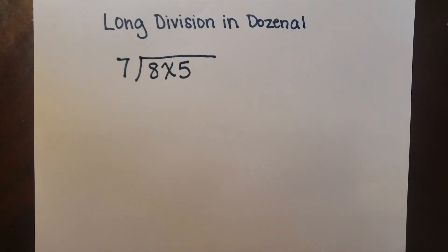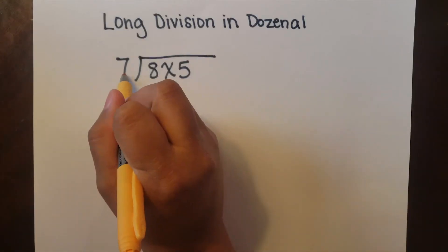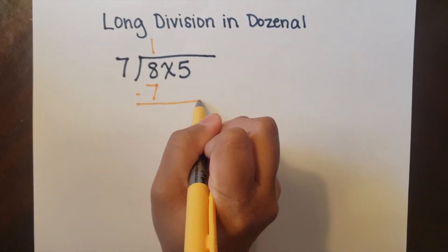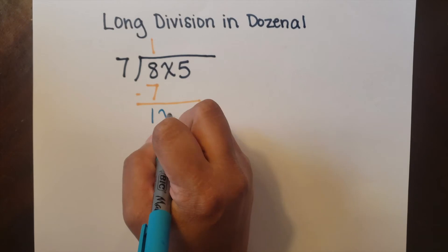This is gonna start out like normal division. I see that seven will fit into eight one time, and then I subtract the seven leaving me with one. And I've got to carry down the deck.